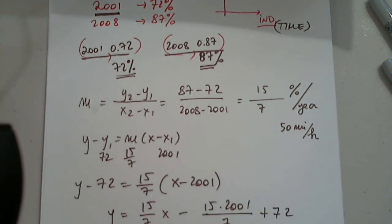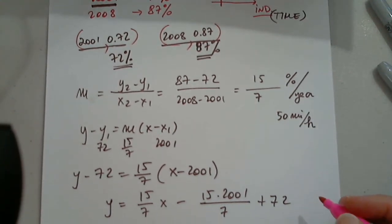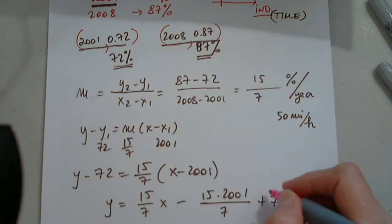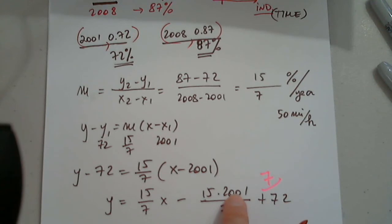I distribute 15 over 7 x minus 15 times 2001 over 7, and then I add 72. So in order to determine this, remember how we add and subtract fractions. If you have difficulties with that, you should immediately address that issue. I have to multiply this by 7. So I have negative 15 times 2001 plus 72 times 7.